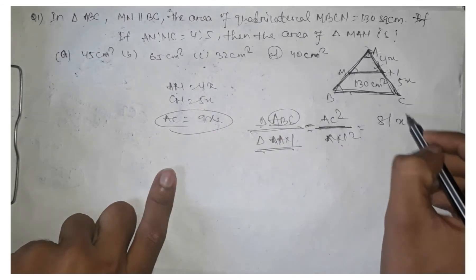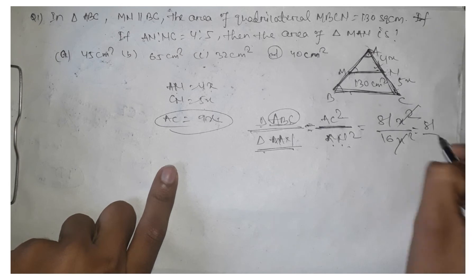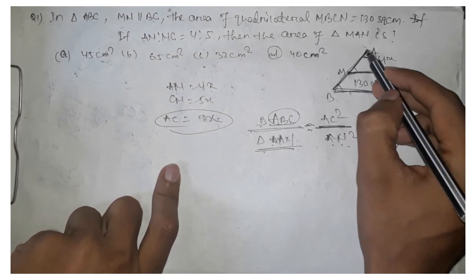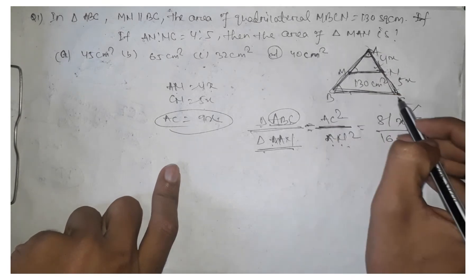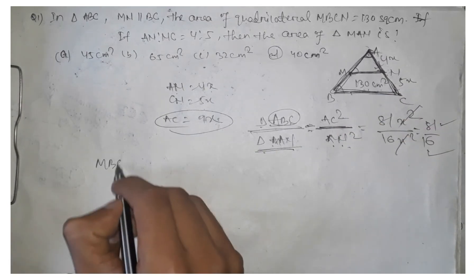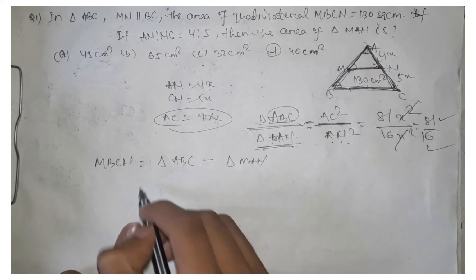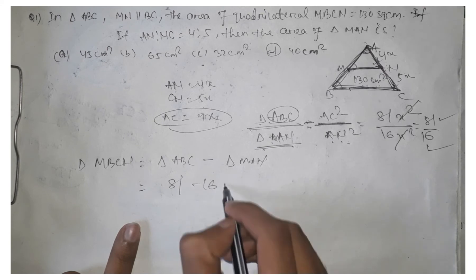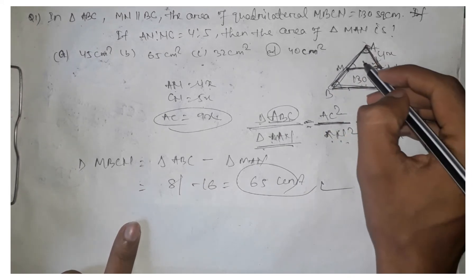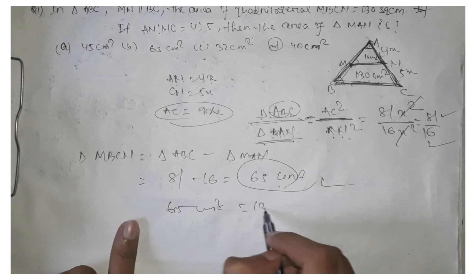AC square equals 81x square and AN square equals 16x square. From there we can calculate the ratio: if the area of triangle AMN is 16 units, then the area of the whole triangle ABC will be 81 units. The area of quadrilateral MBCN equals area of ABC minus area of AMN, which is 81 minus 16 equals 65 units.